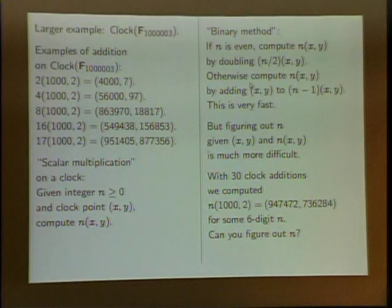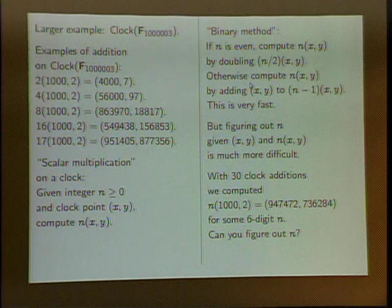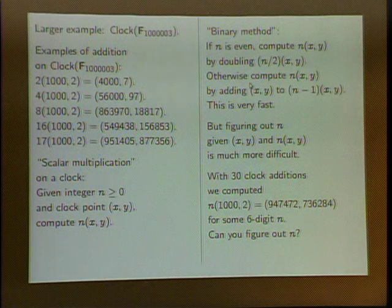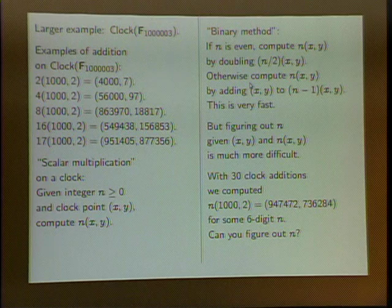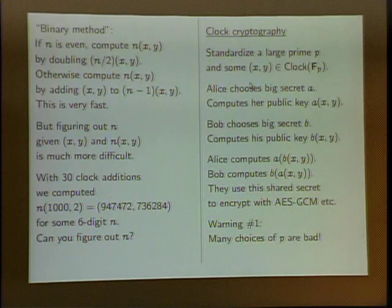The binary method works for scalar multiplication: if n is even like 16, compute 8 times the point and double it. If n is odd, compute 16 times the point and add once more for 17. You do lots of doubling and some additions to quickly reach any size of n times p. If you're given a curve point P and integer n, you can compute n times P very fast. But given P and the result of n times P — like seeing (951405,...) — could you guess that 17 was the scalar? That reverse problem is much, much slower.